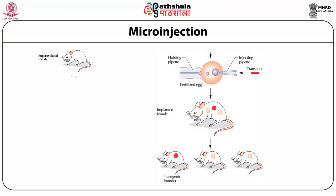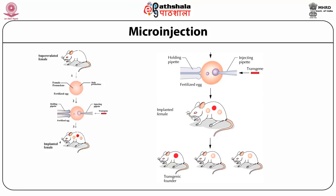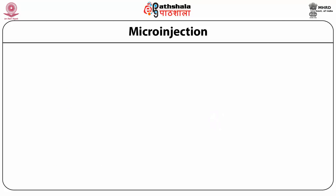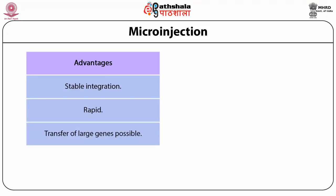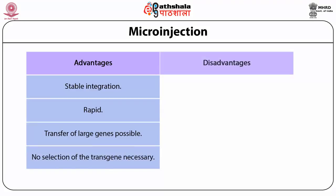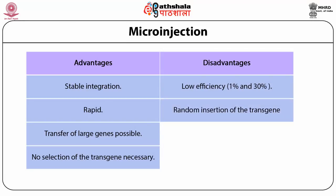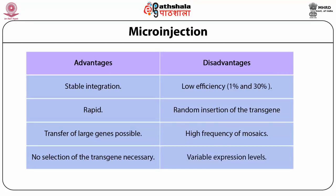In this figure, a superovulated female provides an egg with a female pronucleus and a male pronucleus, into which we insert our transgene. After inserting the transgene into the male pronucleus, the egg is implanted into a surrogate mother, producing transgenic mice. Advantages of microinjection include stable integration, it is a rapid technique, transfer of a large number of genes is possible, and no selection of transgene is necessary. Disadvantages: low efficiency between 1% and 30%, random integration of the gene, high frequency of mosaicism, and variable expression levels.